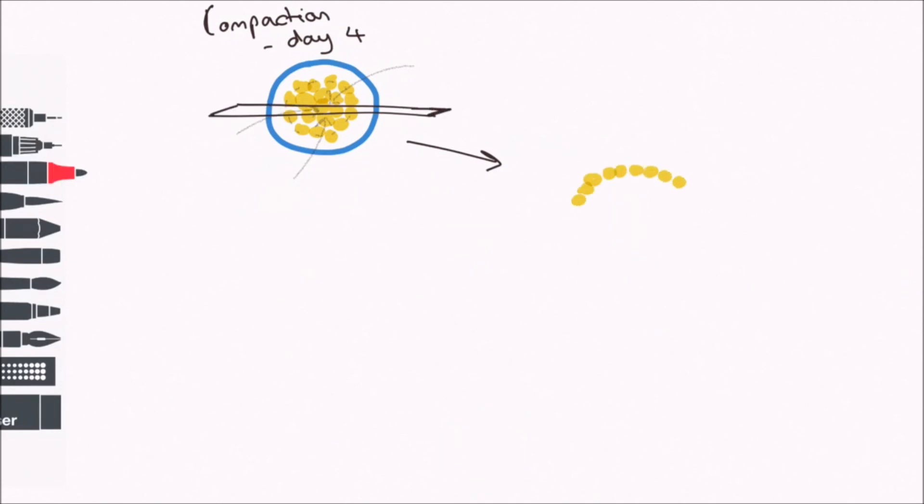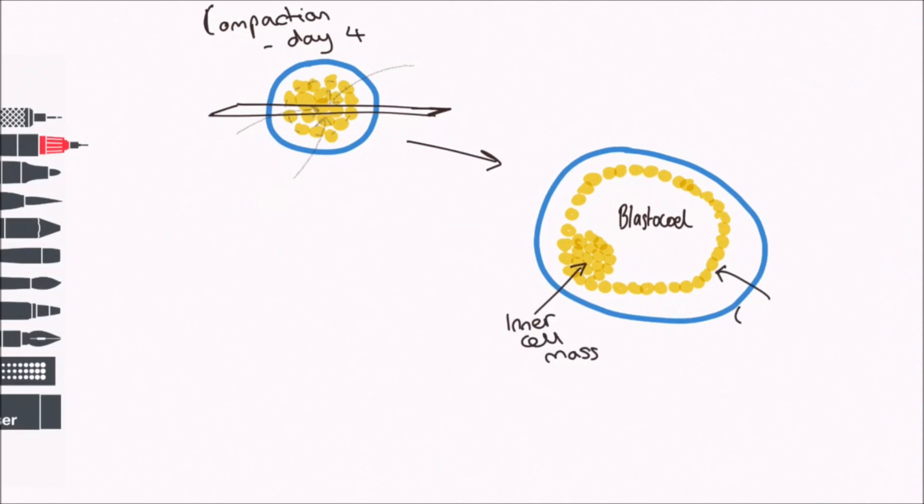Some cells clump at one end to form an inner cell mass. This structure looks different now, so we give it a different name. The whole thing, the blastocoel, the inner cell mass, and the cells around the edge are called the blastocyst.